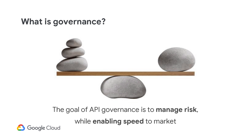We don't want heavyweight authority, control, or regulation. This is why we call it a little g. Finding the balance depends on your organization — startup versus traditional enterprise, risk appetite versus speed requirement.